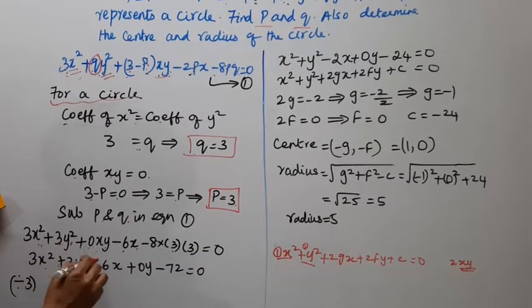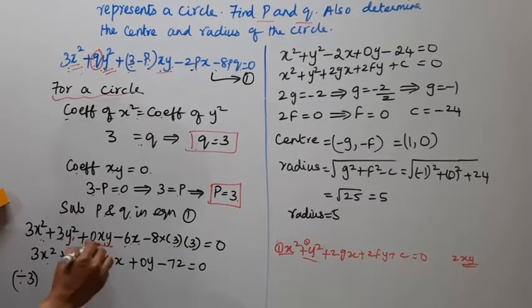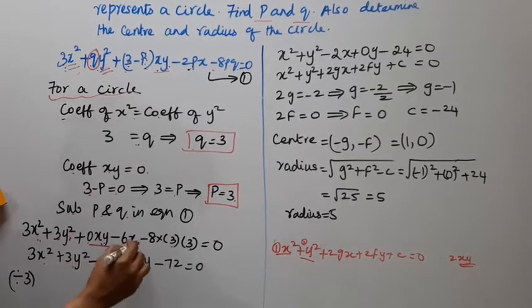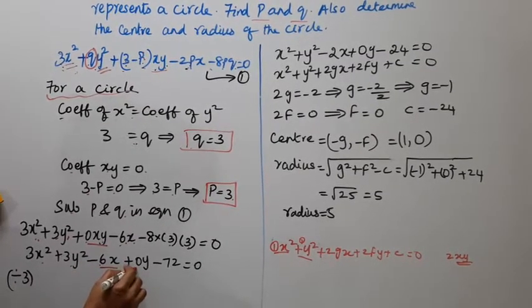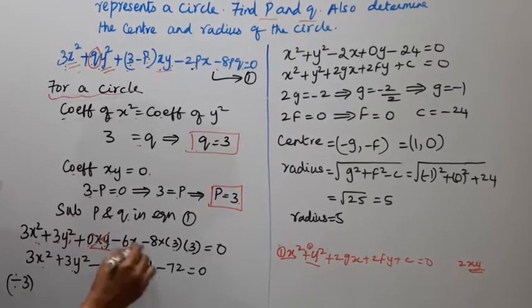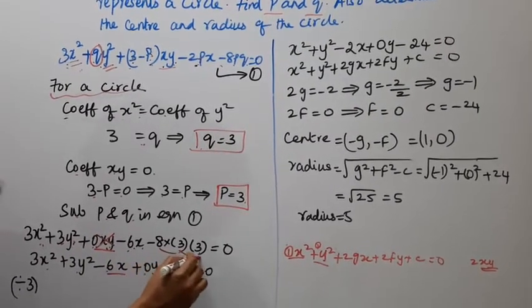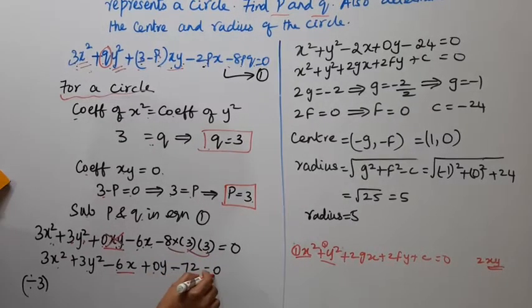So we have 3x², 3y², 0xy, minus 6x. The constant is 8pq which is 8 times 3 times 3 equals 72, minus 72 equal to 0.